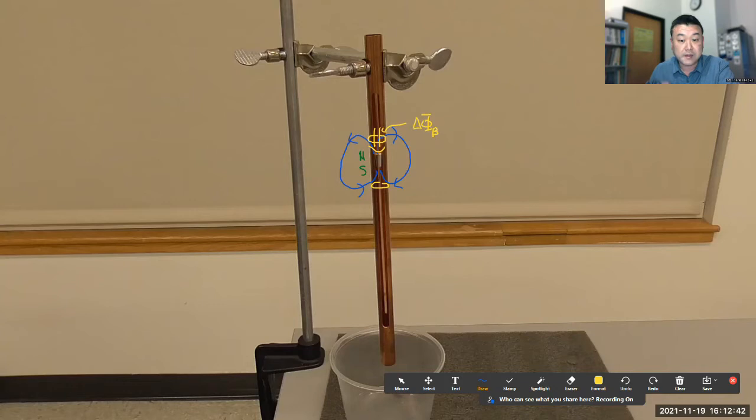And Lenz's law says that... or sorry, Faraday's law says that if there's an electric... the line integral of electric field or voltage, that there's a voltage associated with the rate of change of magnetic flux.